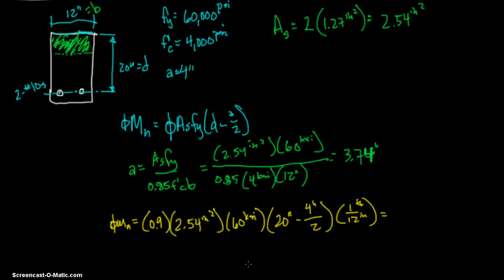So 0.9 times 2.54 times 60 times open parentheses 20 minus 4 divided by 2 close parentheses divided by 12 equals 205.7. And that's going to be foot kips. That's what we usually deal with.